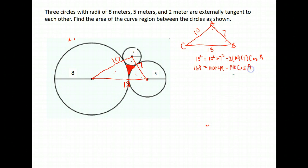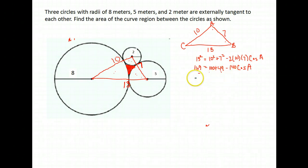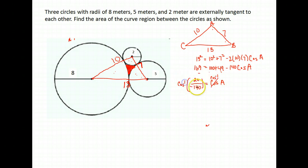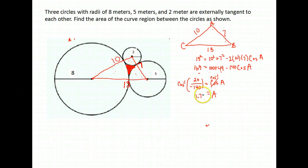I'm going to solve for cosine A: subtract 100 and 49 from both sides, then divide by negative 140. So cosine A equals (169 minus 100 minus 49) divided by negative 140, which is 20 divided by negative 140. Taking the inverse cosine of both sides — make sure your calculator is in radian mode — angle A is about 1.71 radians.